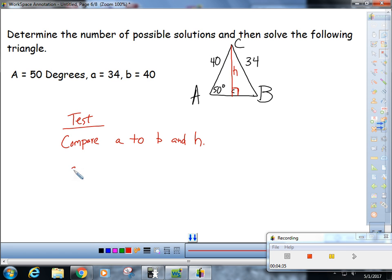Well, we use SOH CAH TOA. So sine of 50 is H over 40. So H is 40 times the sine of 50, and that is 30.6. Here's what's going on: H is smaller than A, which we would expect it to be. However, A is also smaller than B.